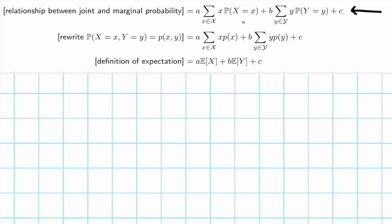And then I rewrite this back using pX, and I rewrite this using pY, and I have this expression. And lastly, what is this? This is x times pX summation over x. This is expected value on x. Similarly, this is expected value of y.